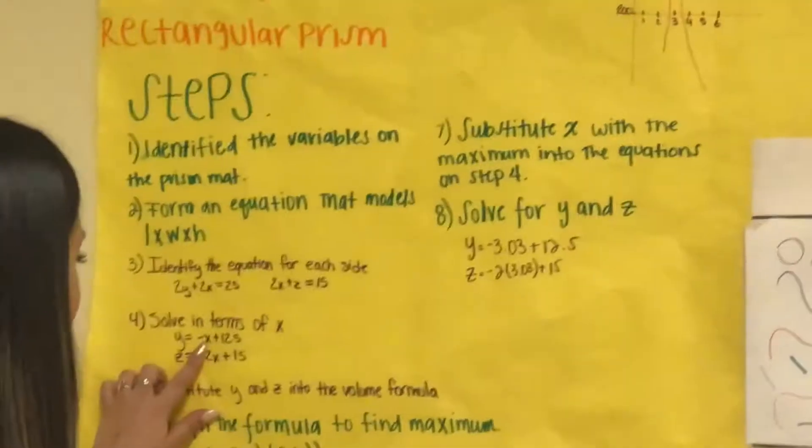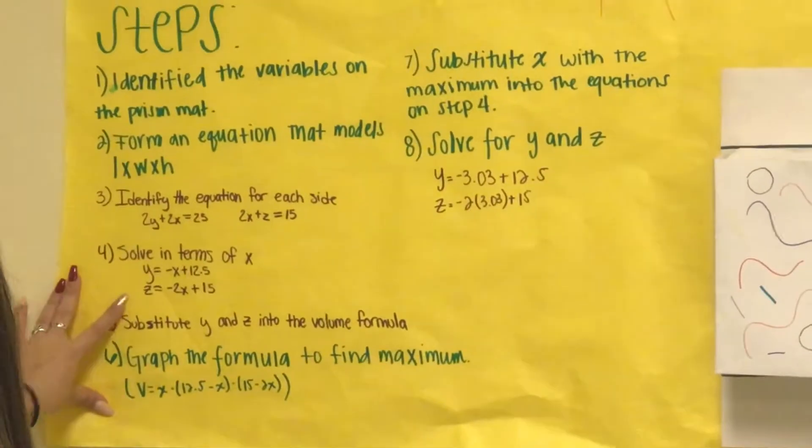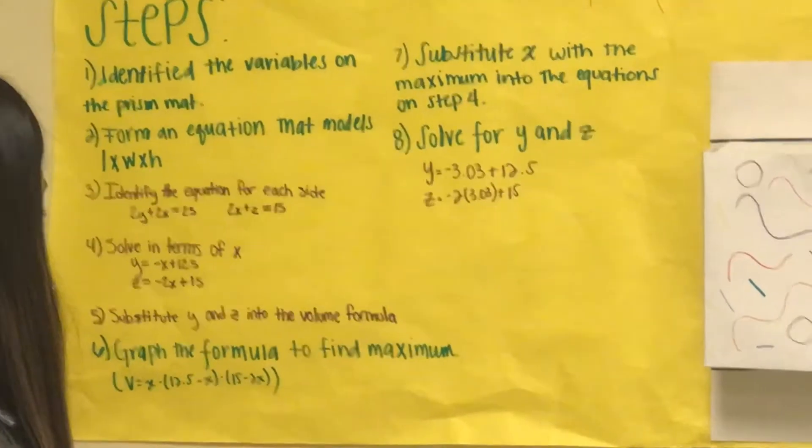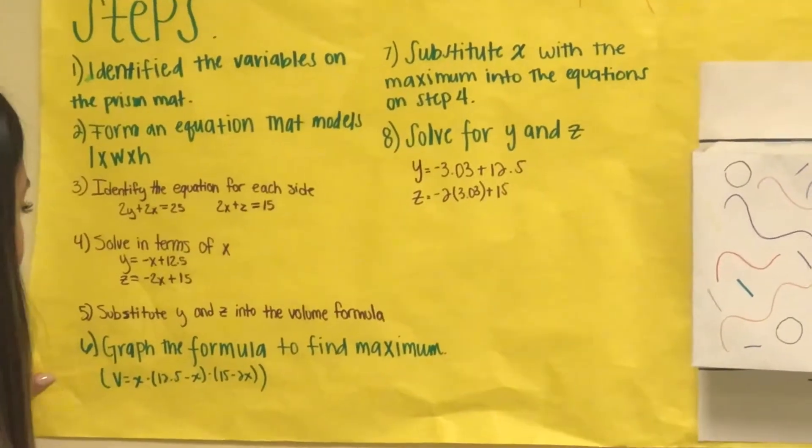Step number four was to solve in terms of x, which is y equals negative x plus 12.5, and the second one was z equals negative 2x plus 15. Step number five was to substitute y and z into a volume formula.